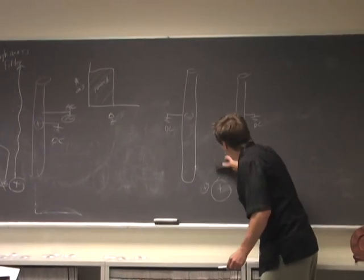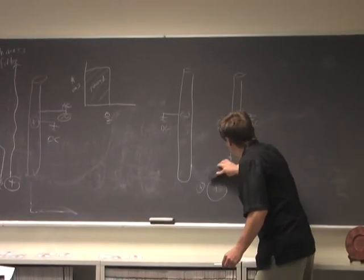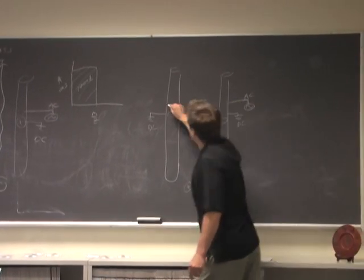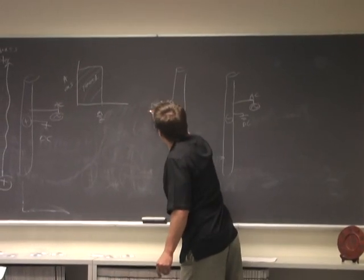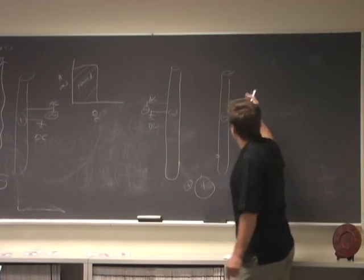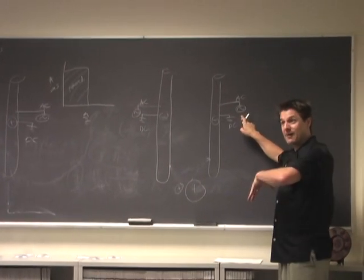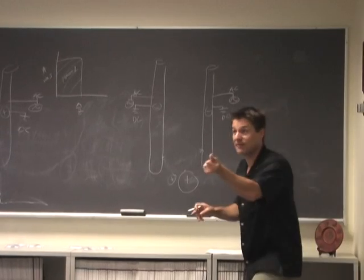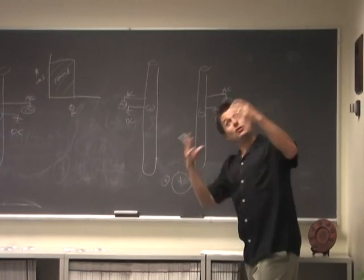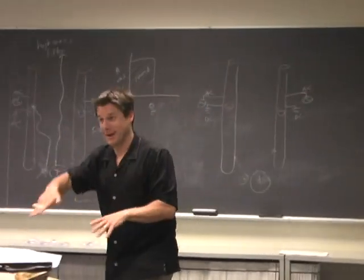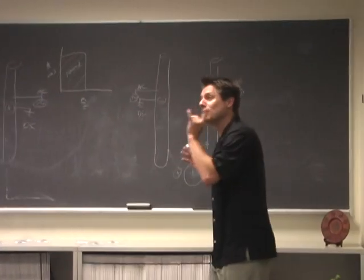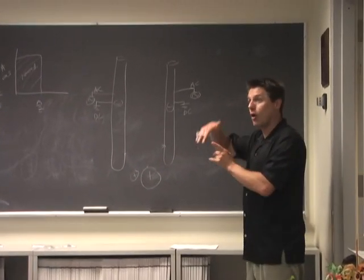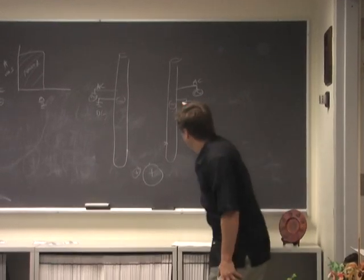So what we're going to do is add the alternating current to it, just like we did over there. Let's add the alternating current. We'll start at negative, ramp it up to positive until the positive overcomes that, and then these rods turn positive, then negative, then positive, then negative — it's alternating. So what happens to the motion of these ions as they move through this alternating field?